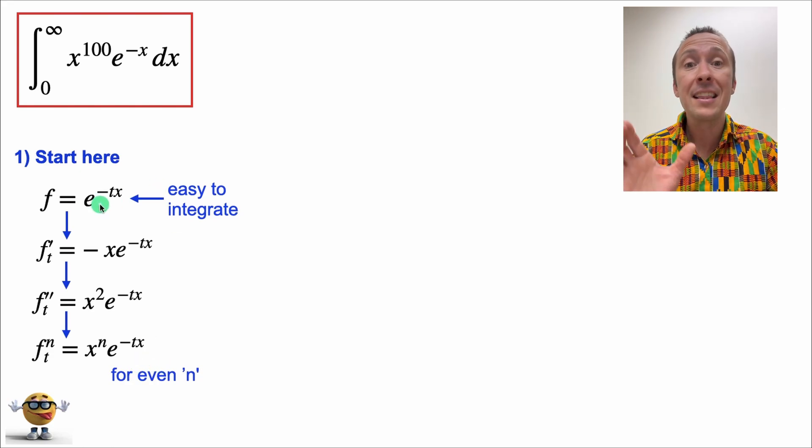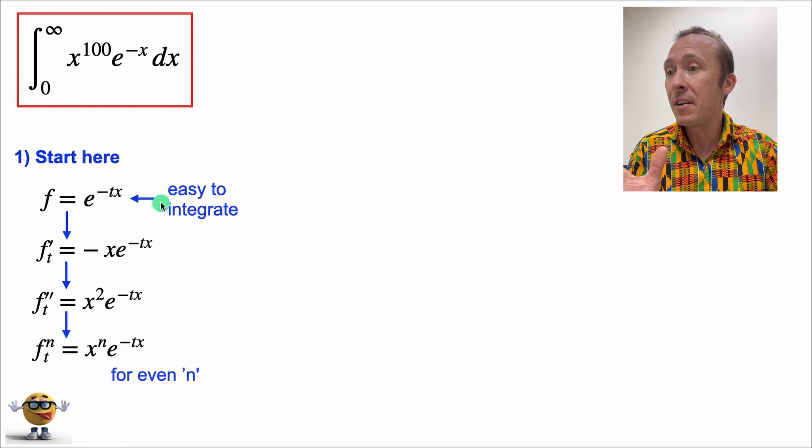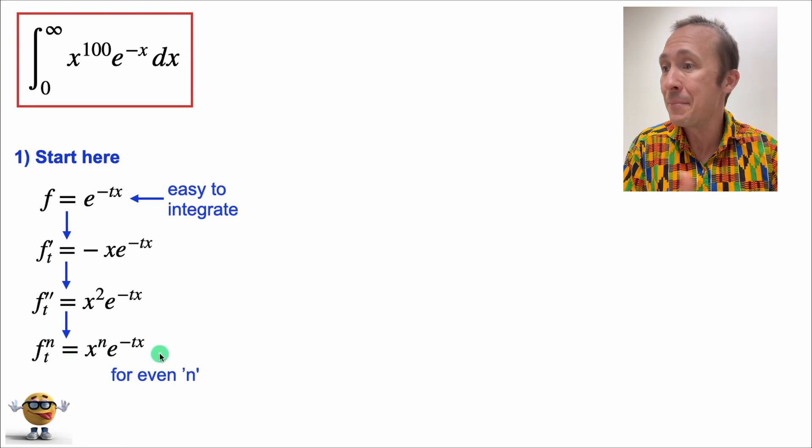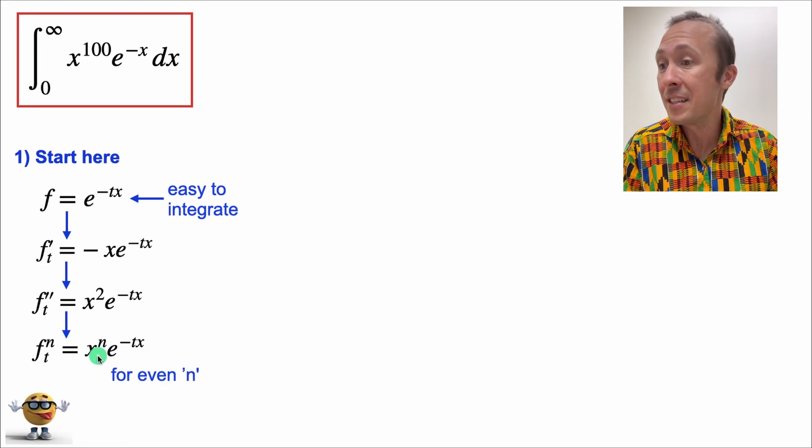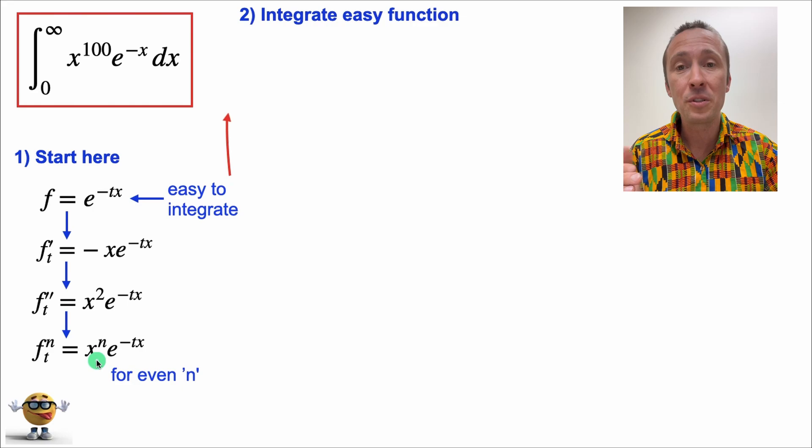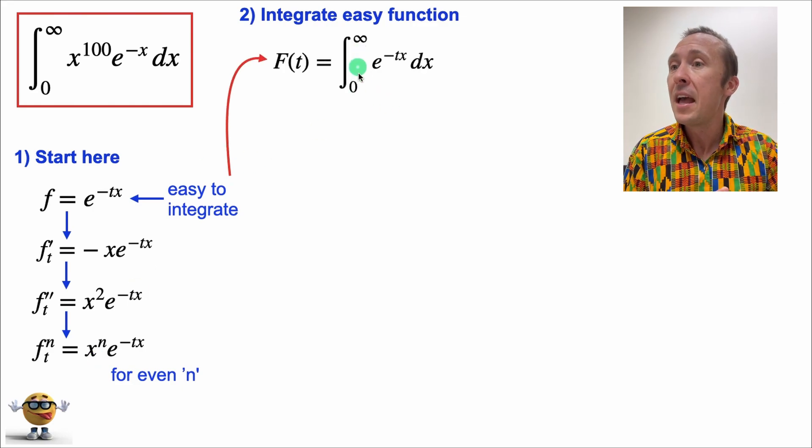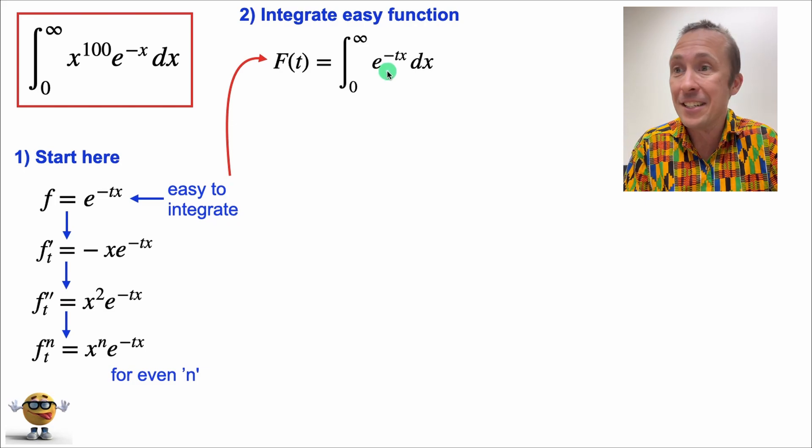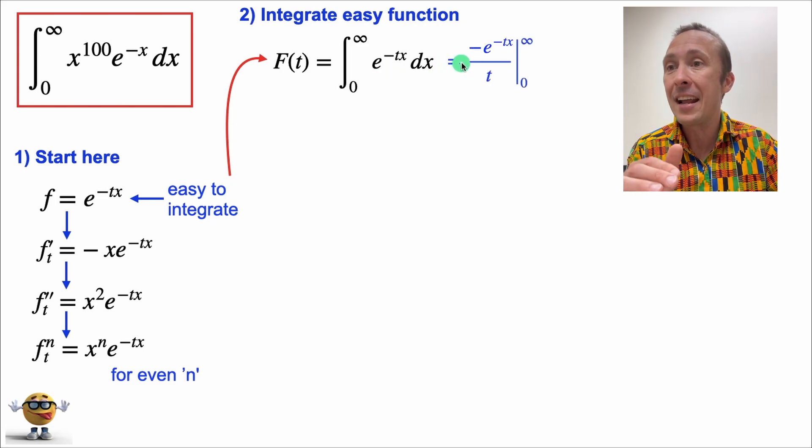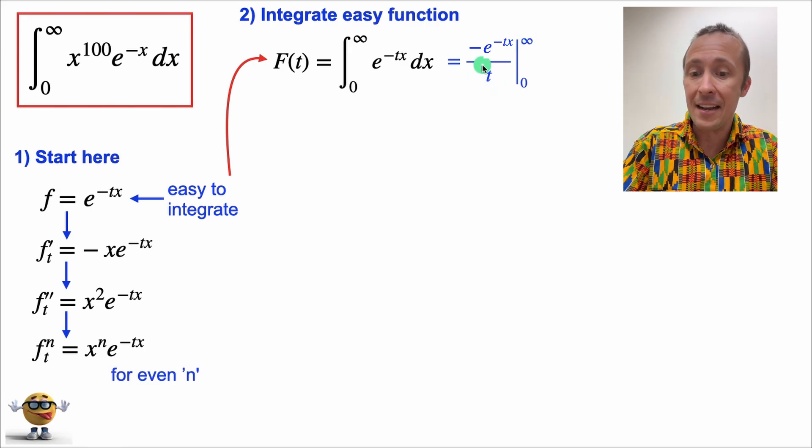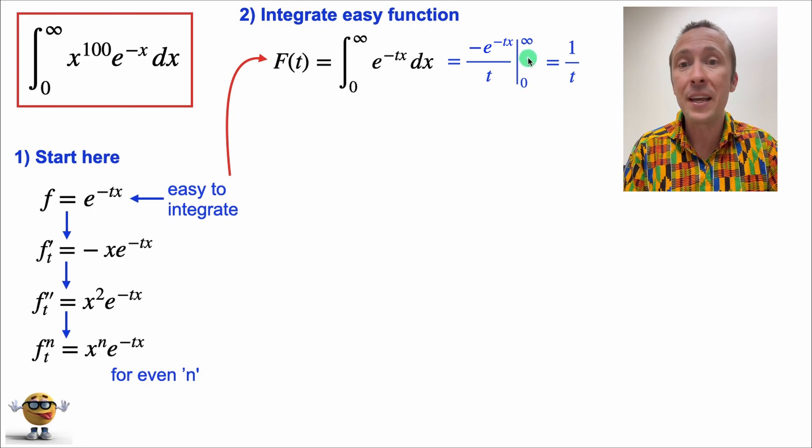We're going to integrate the easy function, which will give us a function of t, and then we'll take the derivative a number of times, 100 times, so we won't actually do it 100 times, to get to the integral that we want. So let me show you how this works step by step. First we'll integrate the easy function, integral of e to the negative tx, which is literally our friend to integrate, so this is negative e to the negative tx over t evaluated from 0 to infinity, and if we evaluate this in the limits, we get 1 over t.